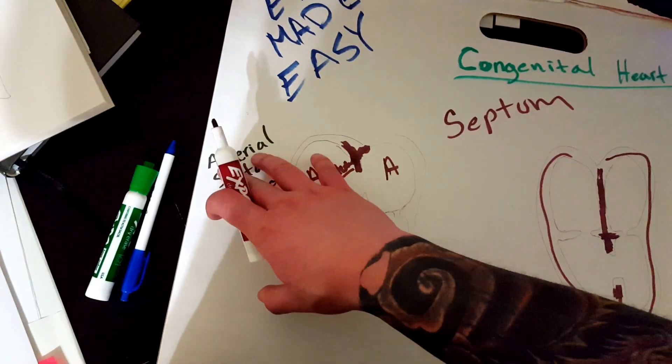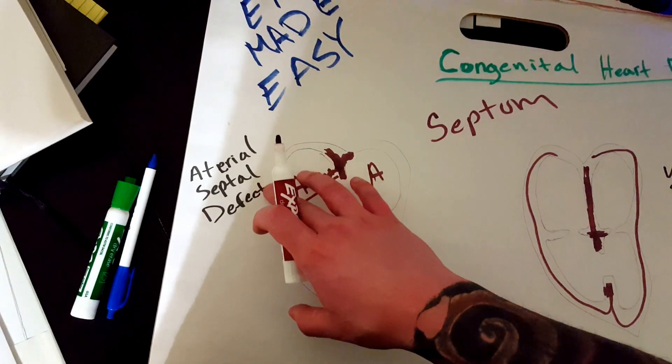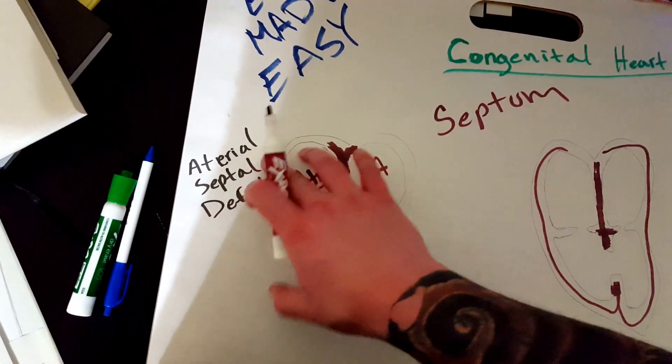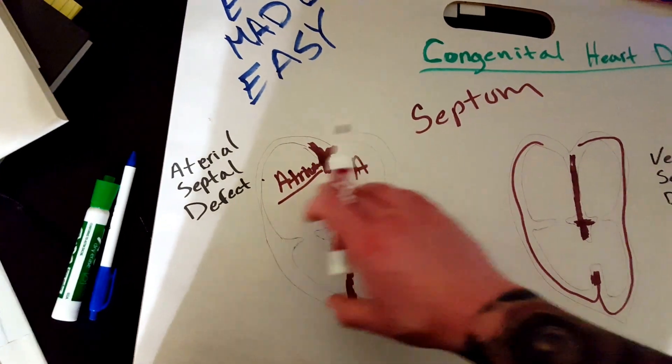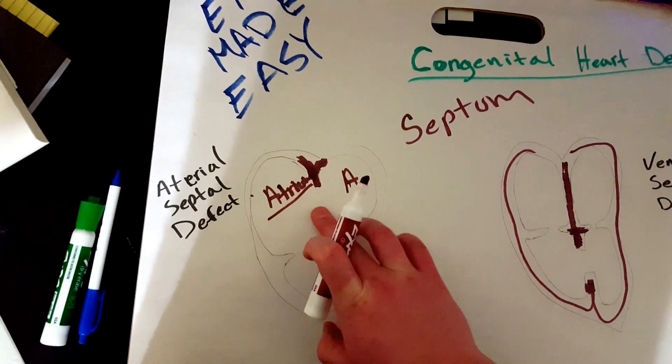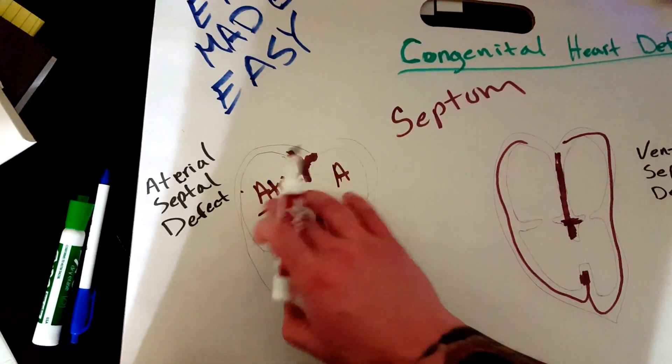So, you have what's called the ASD. So, atrial septal defect. That means that it's in the atriums. So, if it's in the atriums, that means that you have a hole between the two atriums.